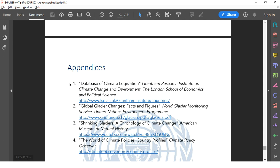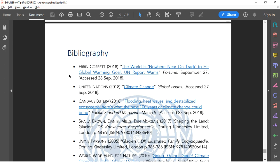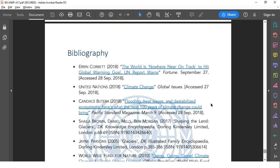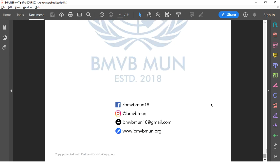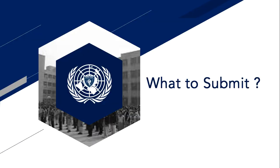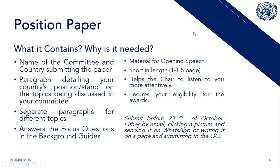Get started with your research — the more you research, the easier it will become. The bibliography, from where we have taken the information, is important because we are doing a professional conference. Now, back to the presentation: what to submit — what do we want from you? First is the position paper, which has to be submitted well before the conference, and the resolution paper, which has to be submitted during the conference.